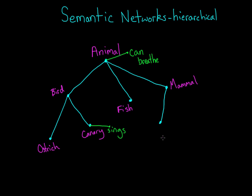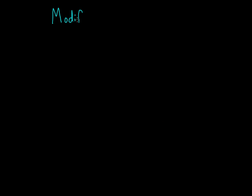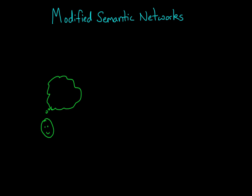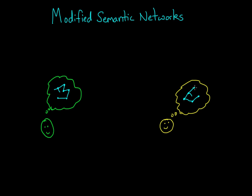However, this isn't true for all types of animals, or even all types of categories. For example, people tend to verify that 'a pig is an animal' faster than 'a pig is a mammal.' Because of this issue and some other problems, Collins and Loftus proposed a modified version of the semantic network. Rather than a hierarchical organization, this model says that every individual semantic network develops based on their experience and knowledge. So some links might be longer or shorter for different individuals, and there may be direct links from higher order categories to their exemplars.